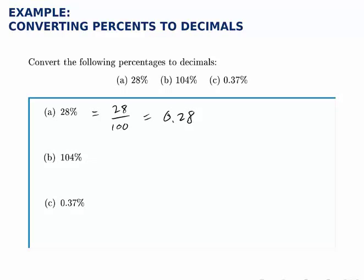The other ones work just the same way. A hundred and four percent is a hundred and four divided by a hundred, which is one point zero four. Notice that we're simply moving the decimal point two places to the left in this case.